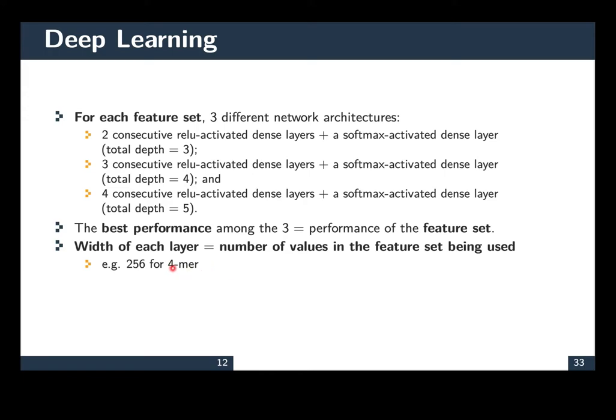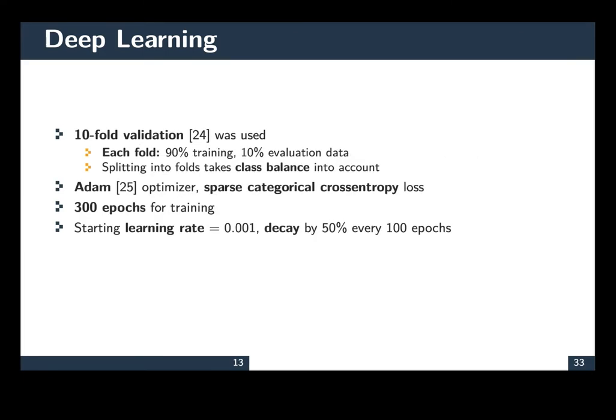We use standard deep learning methodologies. Tenfold cross-validation. The optimizer was Adam. Because it's a multiple class classification problem, we use sparse categorical cross-entropy as loss function. And our learning rate has a decay.